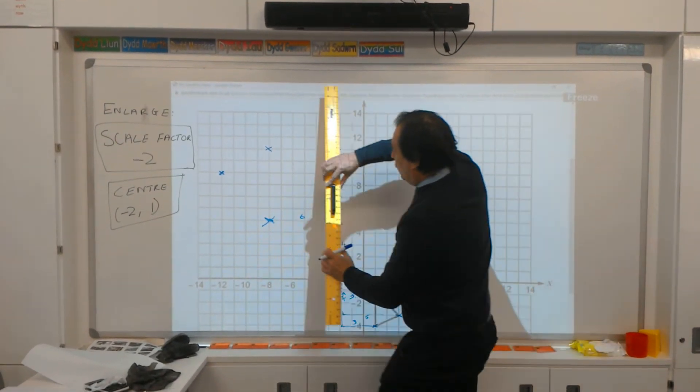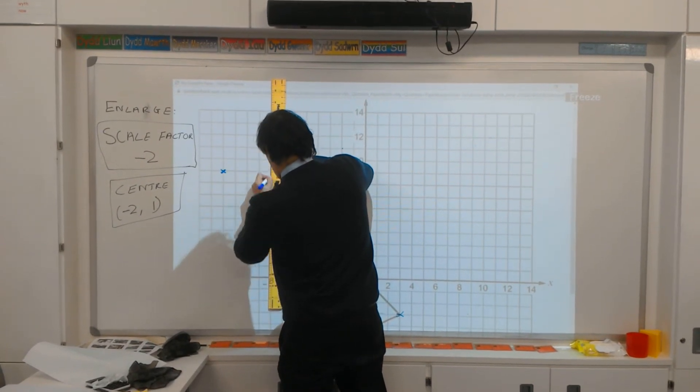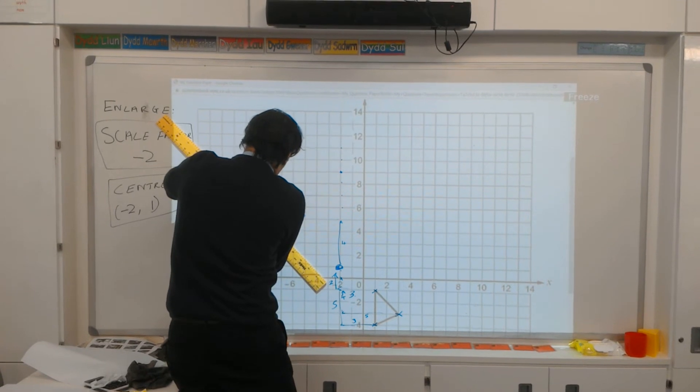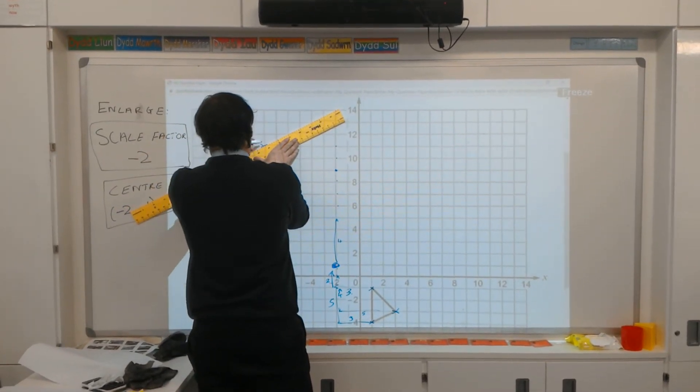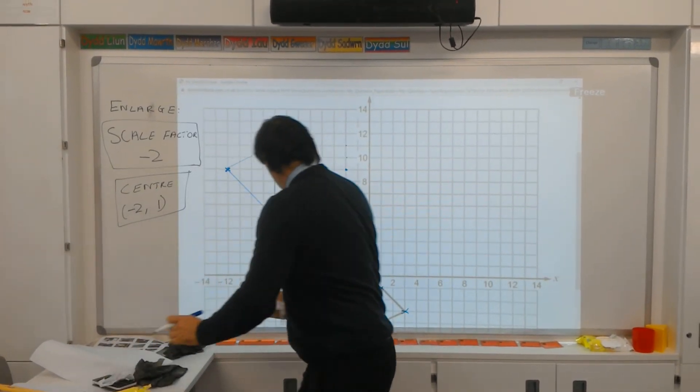So all I've got to do now is to join the three sides together. That would be the projected triangle. Then I'm going to show you a little piece of magic. And it's a good check to see if we've got this.